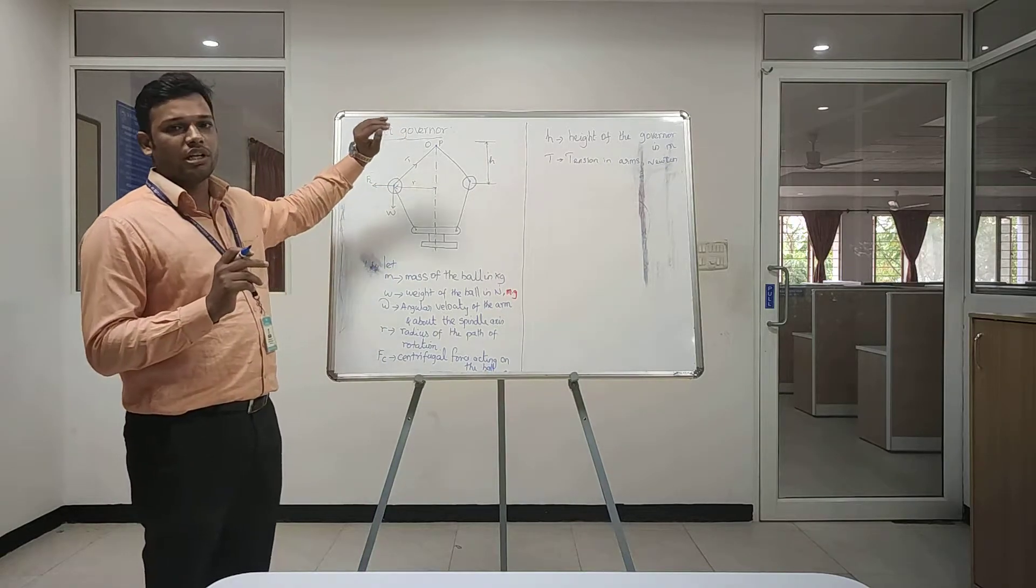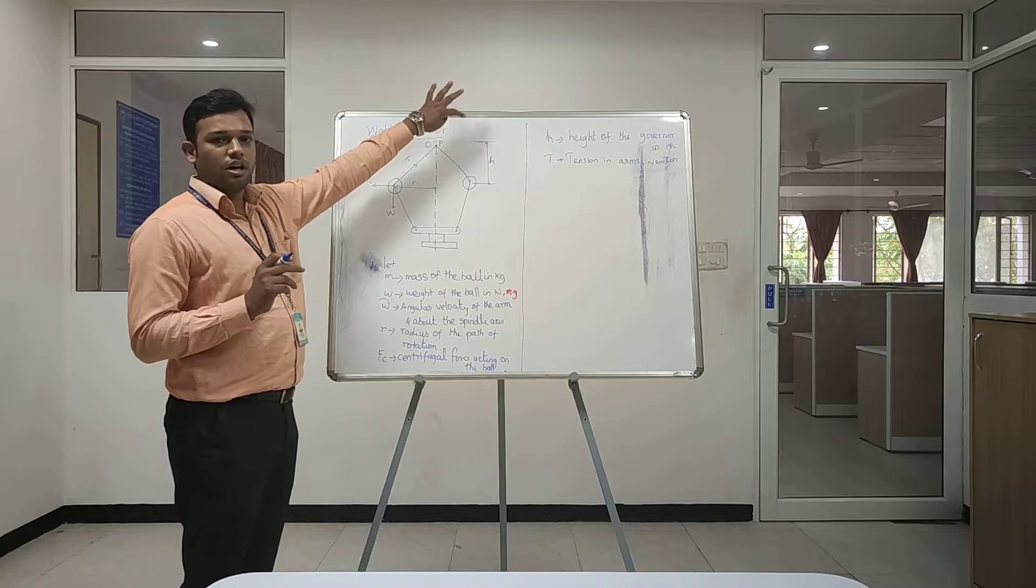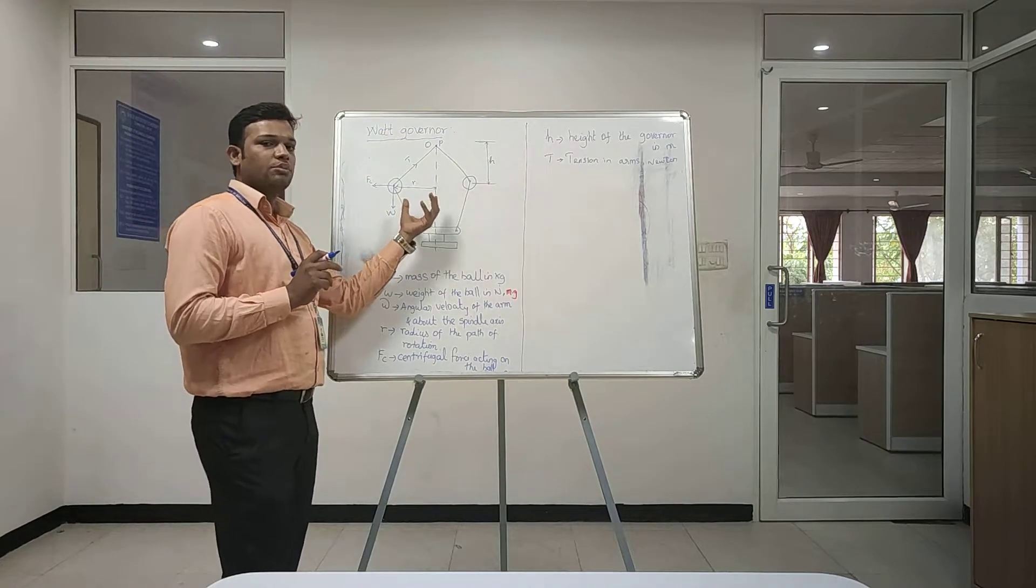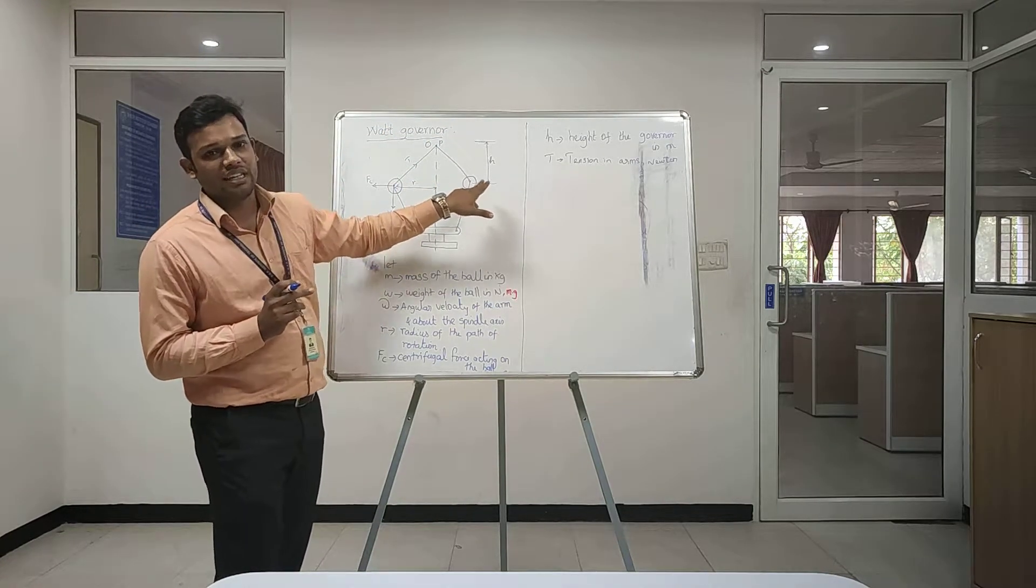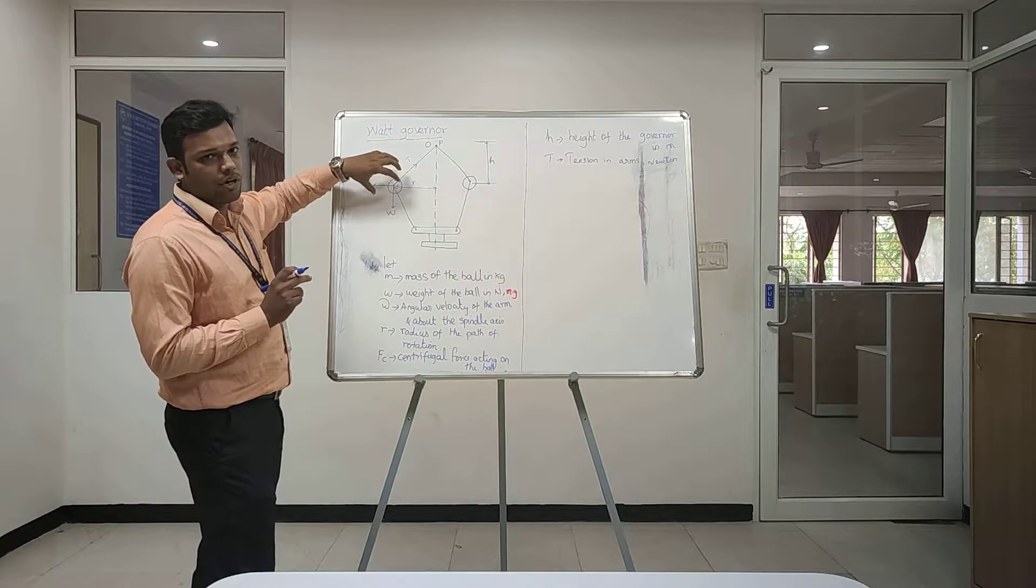This is a skeleton of a Watt Governor. It has two upper arms which are called arms, two lower arms, sometimes we call them legs. When upper arm and lower arm are connected with the ball, it has some weight, some mass.